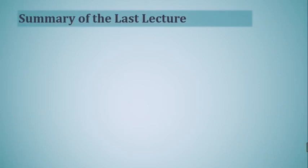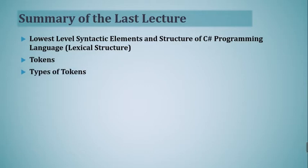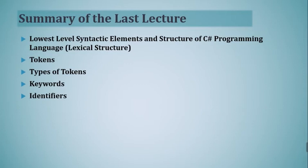Summary of the last lecture: we discussed the lowest-level syntactic elements and structure of C# programming, called lexical structure. Then we discussed tokens — the words of the C# programming language that constitute its vocabulary. We discussed types of tokens; there are five types, but in the previous lecture we covered only two: keywords and identifiers. In this lecture we will cover all the remaining types.